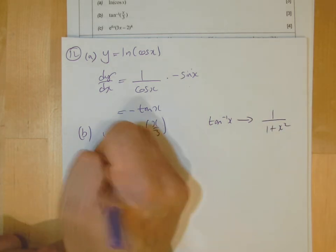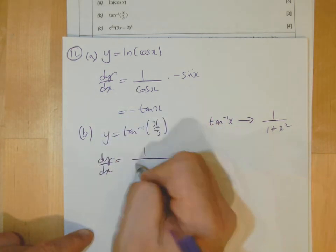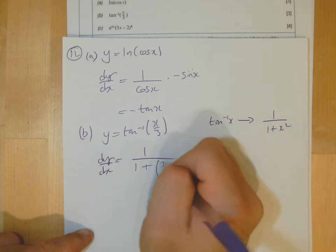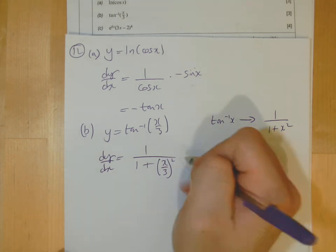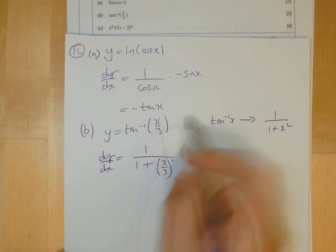So all you do then is to get dy/dx. You put 1, and remember x now gets replaced with x over 3, and you've got to square the whole thing. And then don't forget you've got to times it by the derivative in here, because there's a function of a function. Derivative in here is a third.